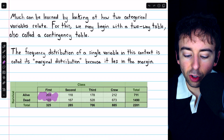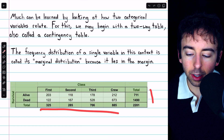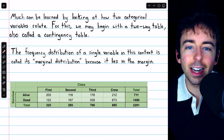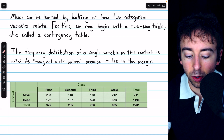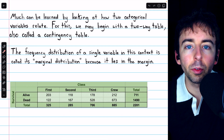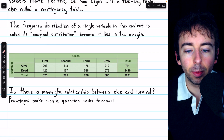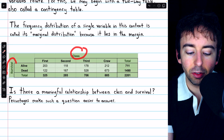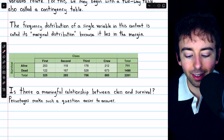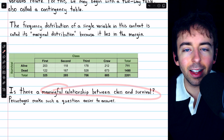It is possible that you could be presented a two-way table without the marginal distributions included. If you have such a table and you're conducting an analysis, one of the first things you should do is compute those marginal distributions. Now that we have this contingency table telling us the class and survival status of those aboard the Titanic, we can start to ask questions like: is there a meaningful relationship between class and survival?